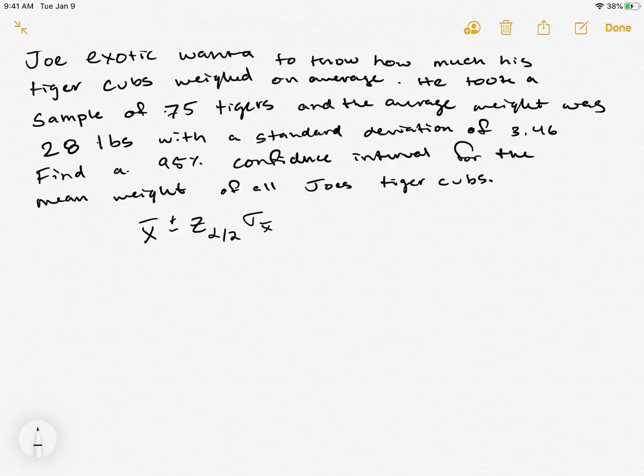Here we know x-bar, which is our sample mean. We took the sample and they weighed 28 pounds on average. We took a standard deviation for the sample, so s is 3.46, and our sample size n, the number of tigers we looked at, was 75.